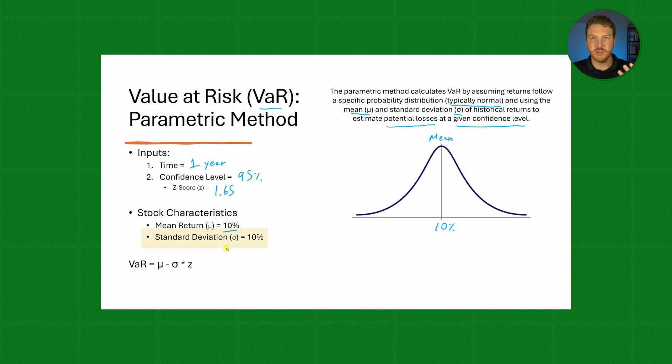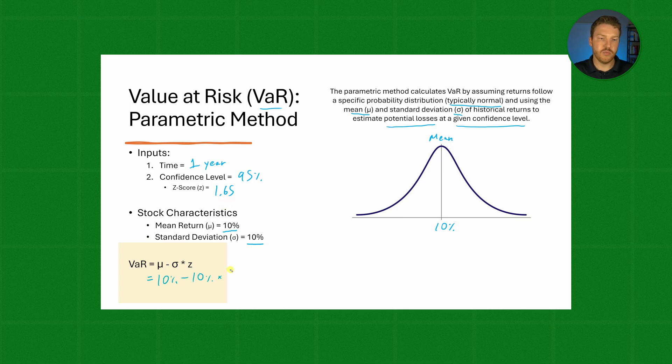As for standard deviation, for the sake of this example we'll assume that the standard deviation is also 10%. Now we can calculate the value at risk using this formula. So the value at risk will be our mean expected return of 10% minus the standard deviation of 10% multiplied by the z-score of 1.65.